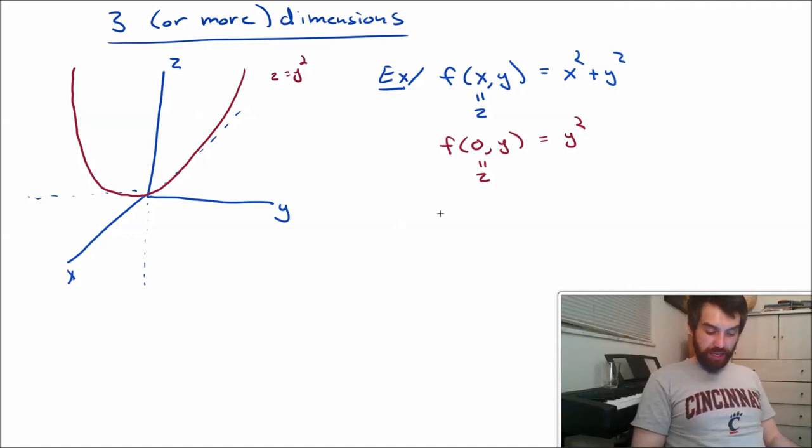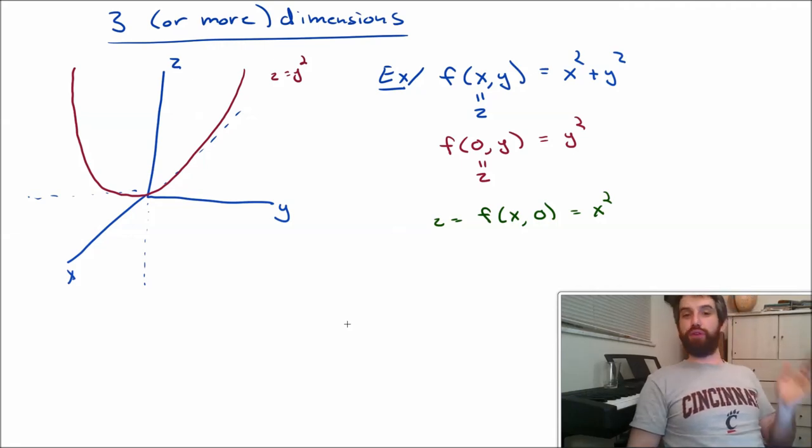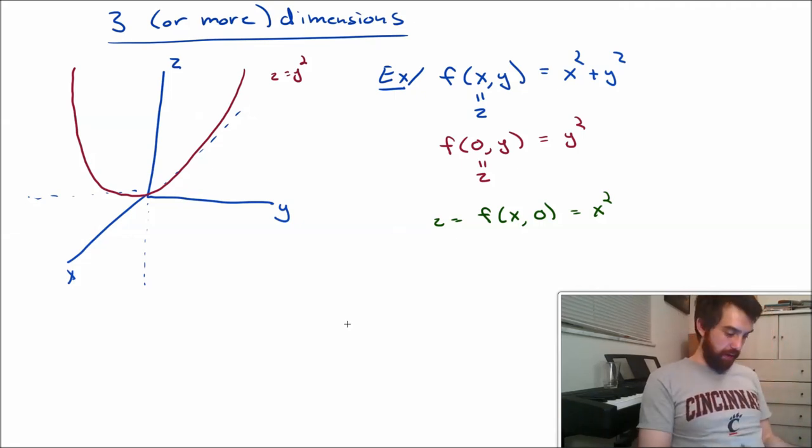And then if I want to look at a slightly different one, I might look at the cross-section where I don't put x in for zero. I put a zero in for y and that's going to give me x squared plus zero. And then z equal to x squared, that's also a parabola, but it's now a parabola for the cross-section when y is equal to zero. So it's like a parabola locked into the x-z plane.